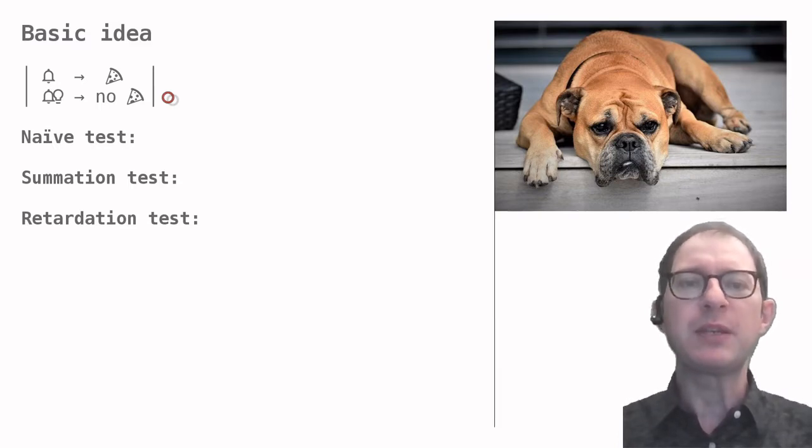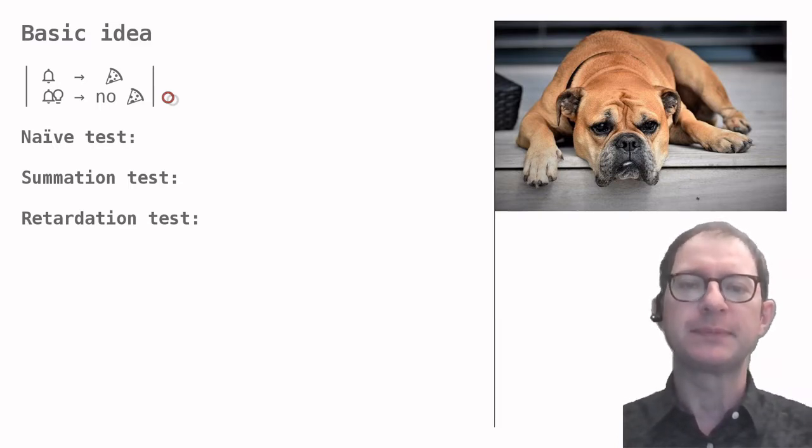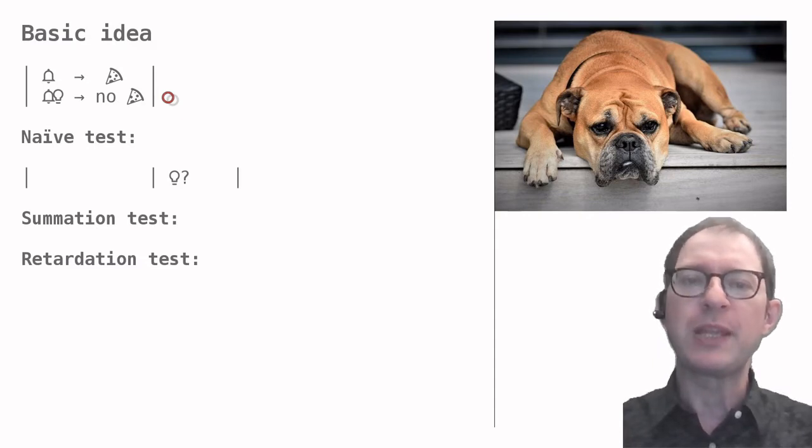At this point we would like to see what the animal thinks of the light. The simplest thing that I have called here the naive test would be to show the light on its own. But this usually does not give us much information. For example, think about a salivation conditioned response in dogs, like in Pavlov's original experiment.